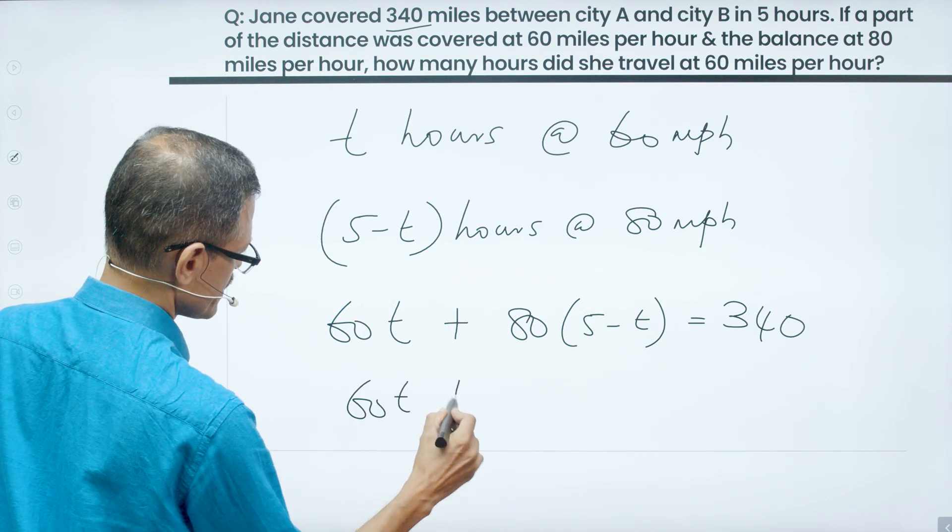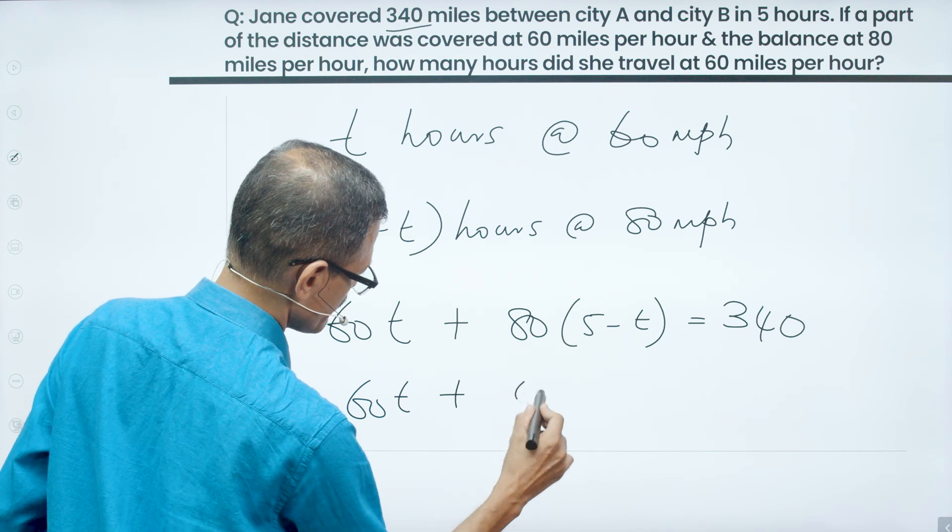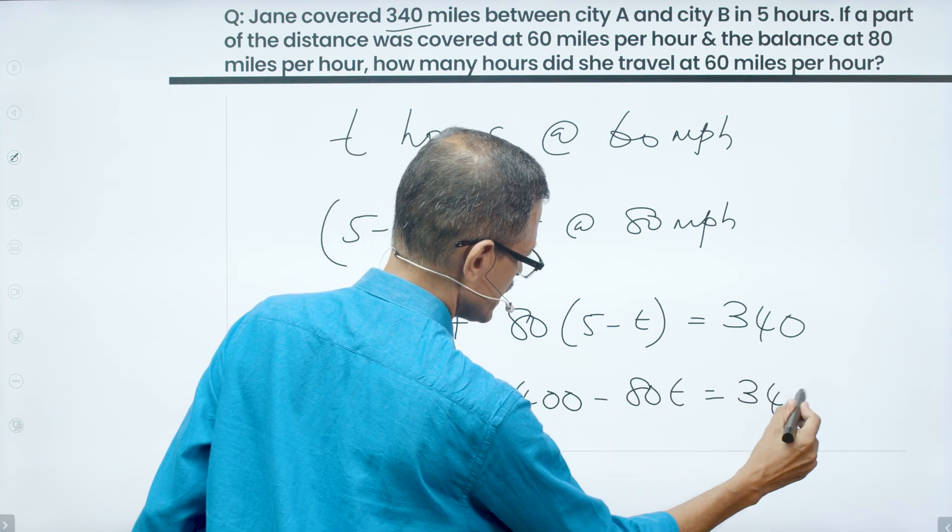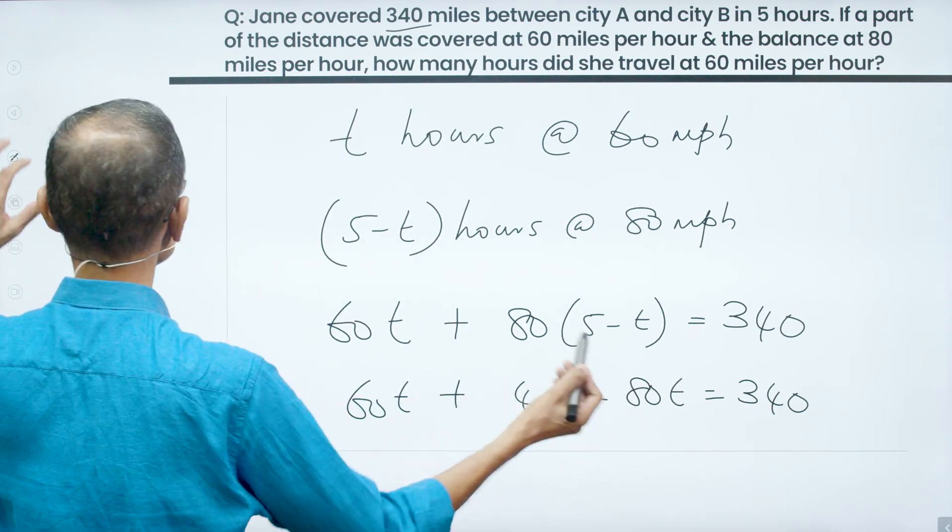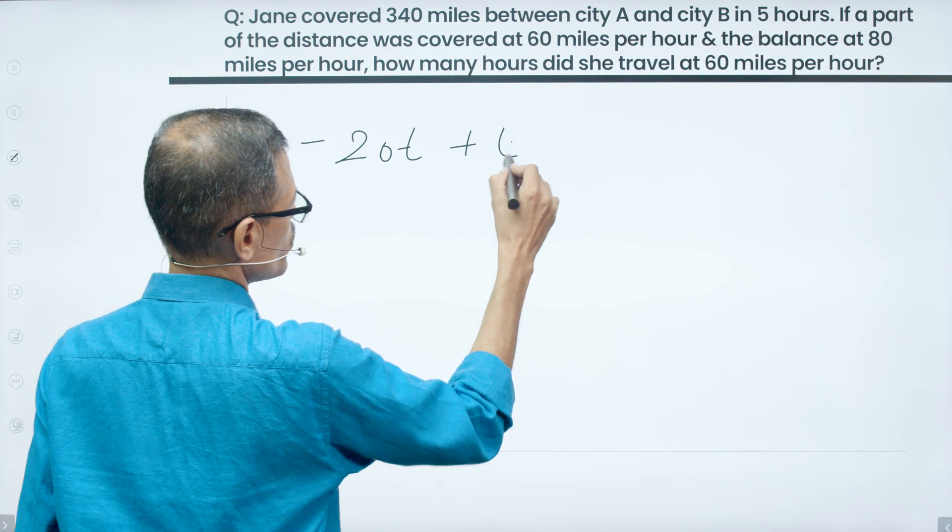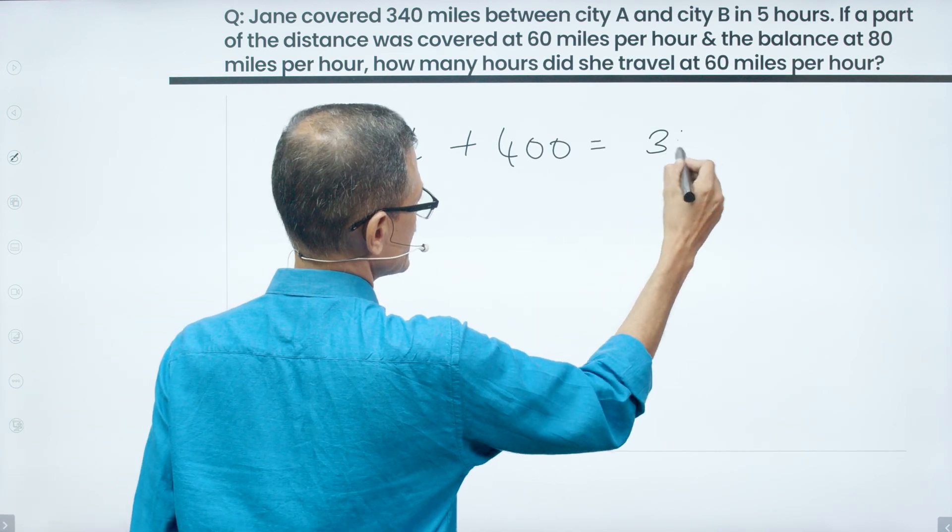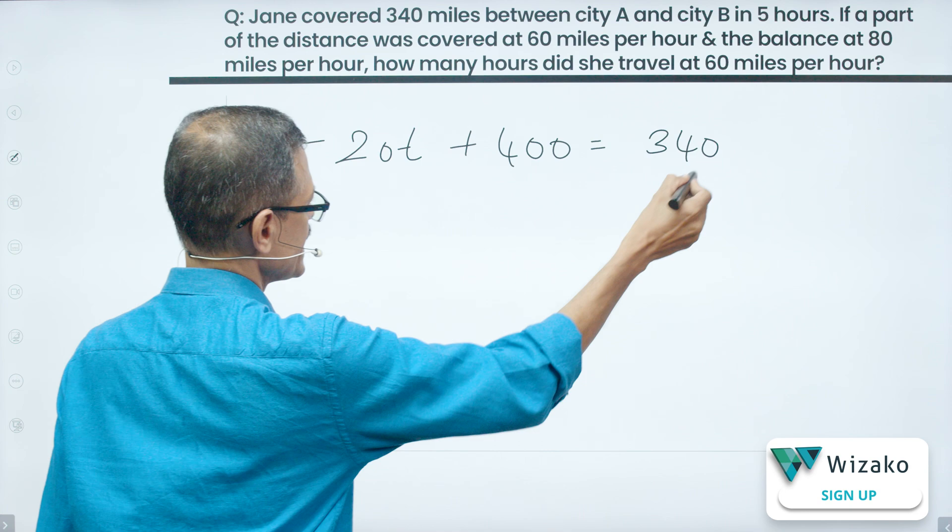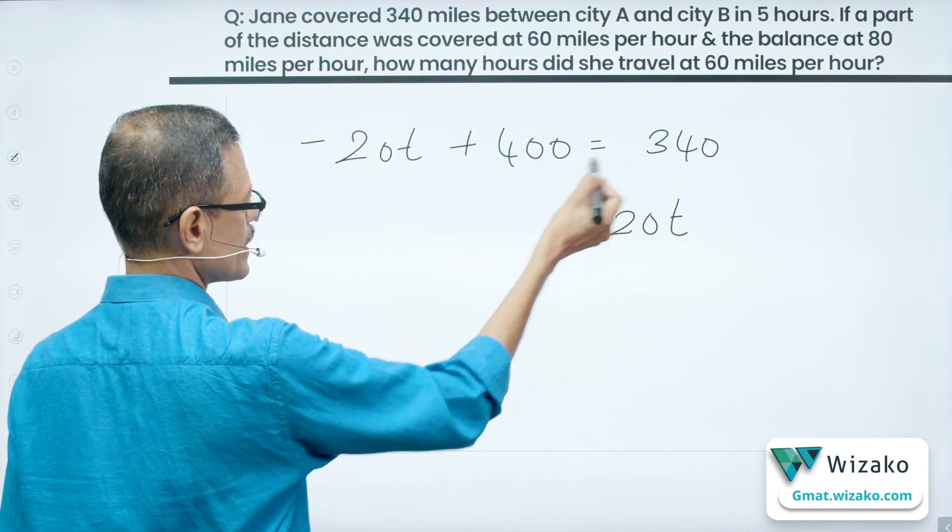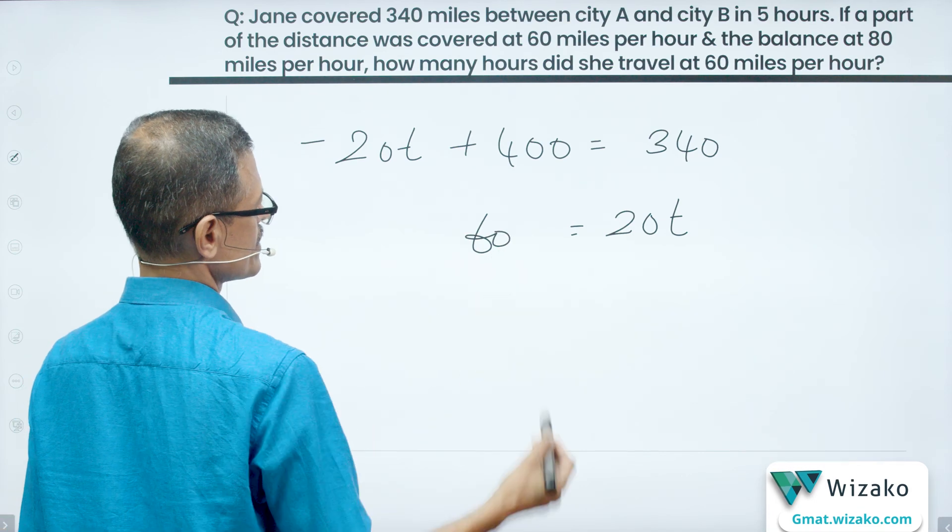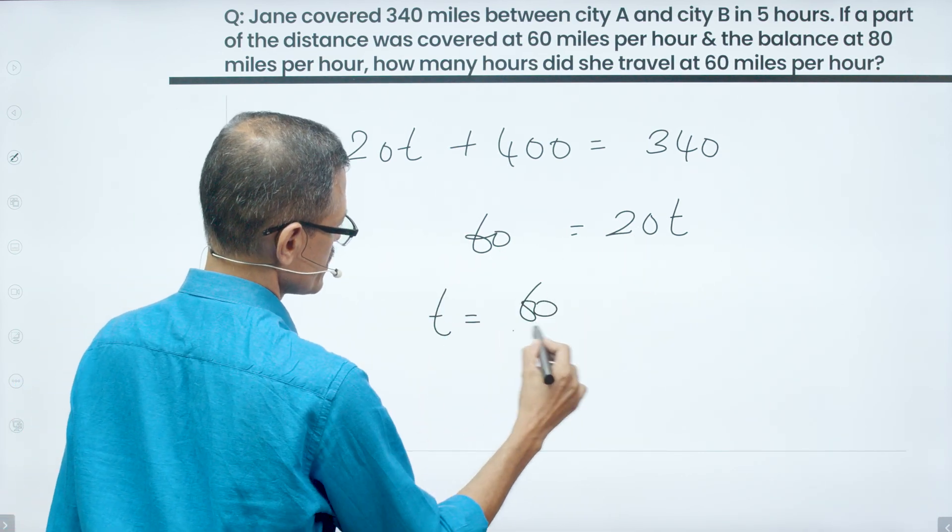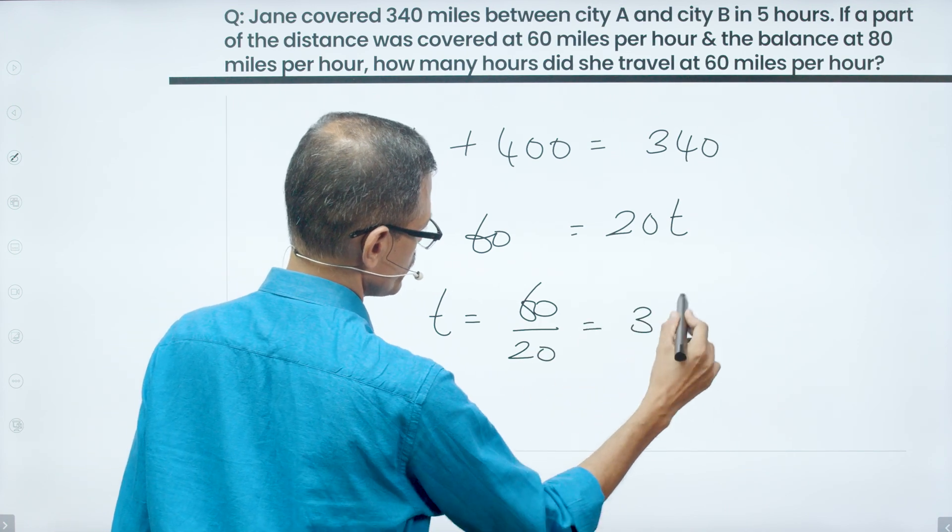60T plus expand this which is 80 times 5 which is 400 minus 80T is equal to 340. 60 minus 80 is equal to minus 20T plus 400 is equal to 340. Let's get the 340 to this side and minus 20 to the other side. So that will become plus 20T and this 400 minus 340 will leave us with 60. 20T is equal to 60. T is equal to 60 upon 20 which is equal to 3 hours.